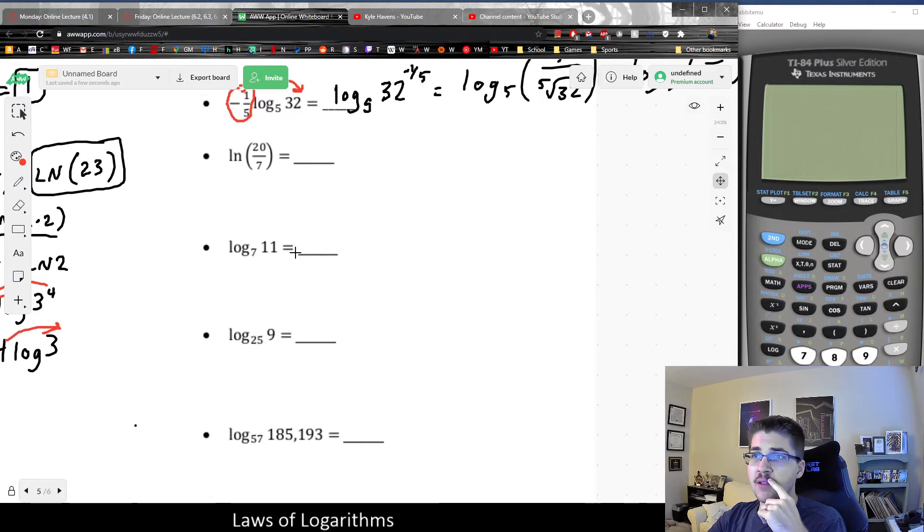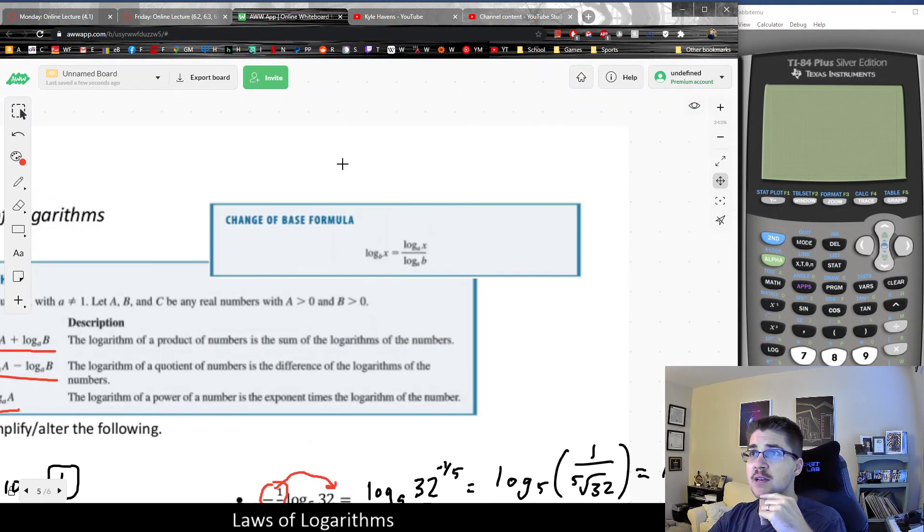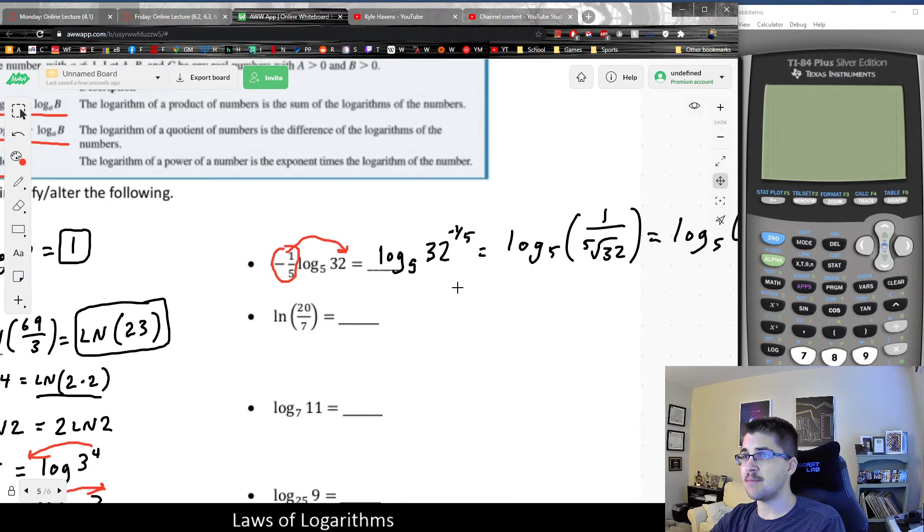Looking at a couple other ones, the last one I want to talk about is the change of base formula, or I like to call it log law number 4. What it states is that if I have a log base b of x, I could always rewrite that as the log base a of x divided by the log base a of b. Or a way of saying it is I can take the base, put it on bottom, and the input will go on top.